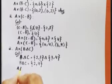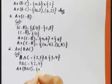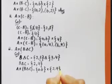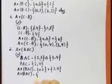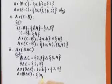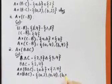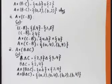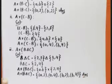Now we find A cross (B symmetric difference C). A value is {a, b}, cross {2, 4}. The Cartesian product gives pairs: (a, 2), (a, 4), (b, 2), (b, 4). This is our final answer for A cross (B symmetric difference C).